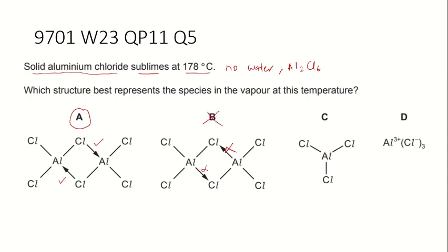So B is not the answer. AlCl3 here is not a dimer. Remember, no water is Al2Cl6. And C, it can only be like this - ionic compound in solid hydrated aluminium chloride. So this is not the case that is described here. So our answer is A.